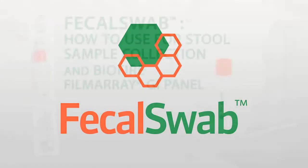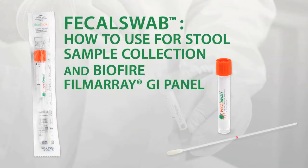Fecal Swab: How to Use for Stool Sample Collection. Each Fecal Swab kit consists of a sterile peel pouch, a regular nylon flock swab, and a screw cap tube containing 2 mL of Carey Blair medium.